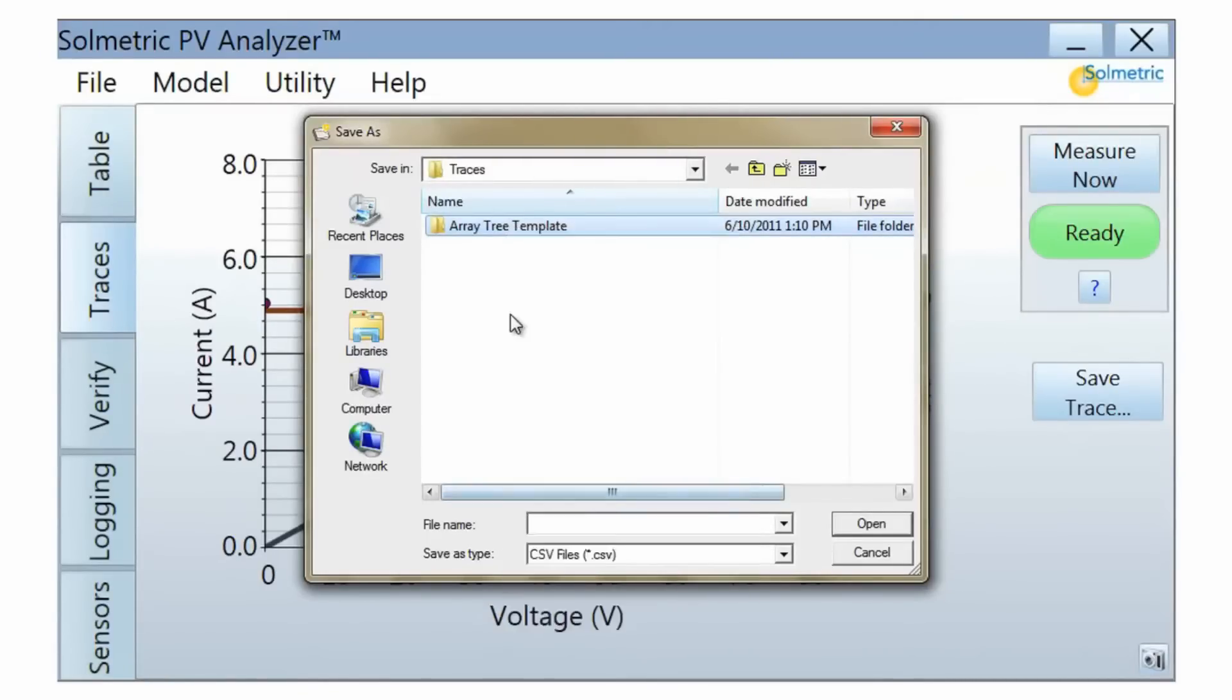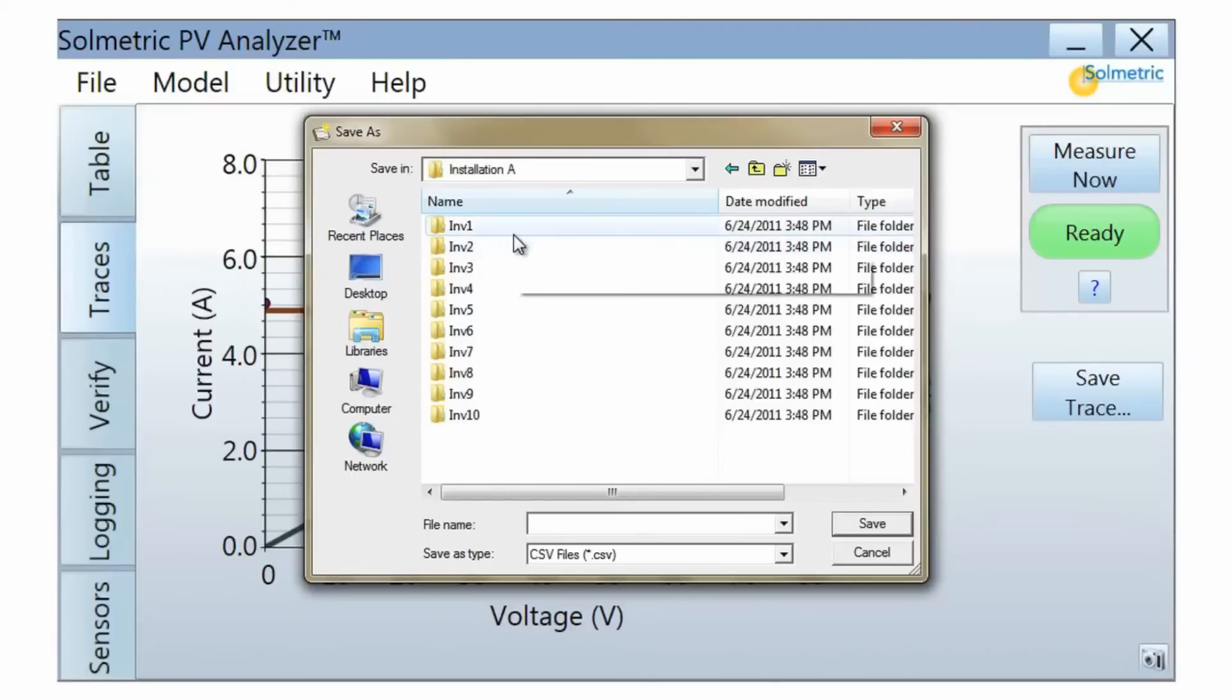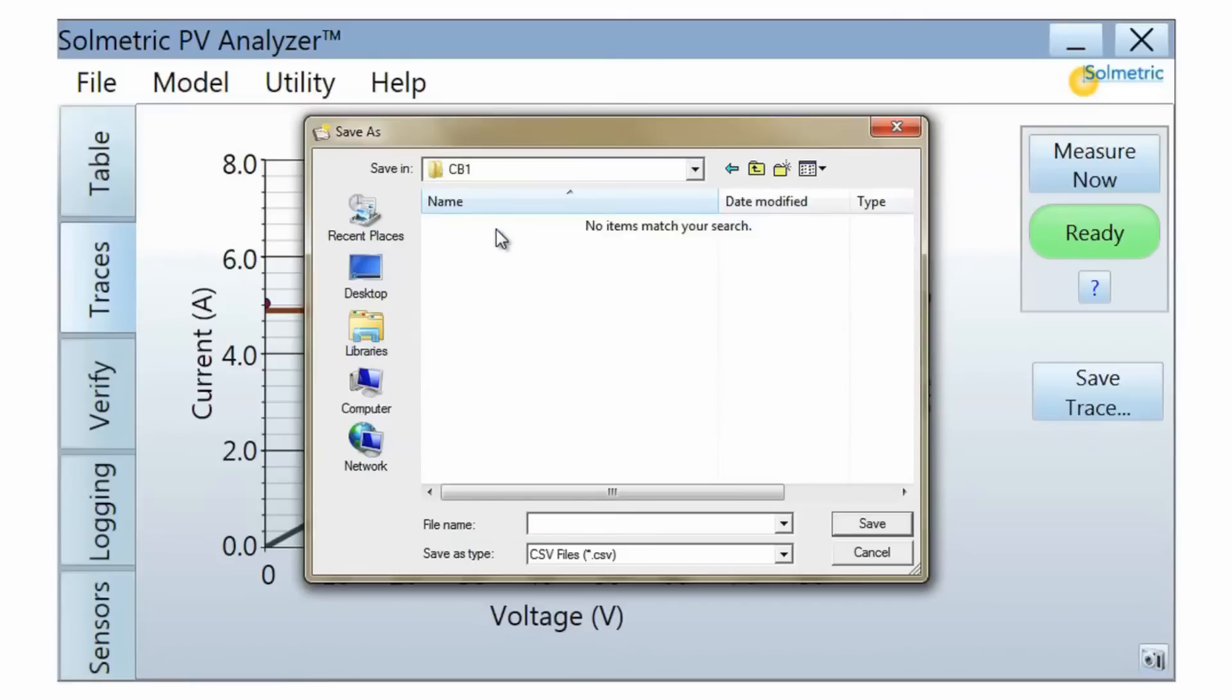Make a copy of the template and rename the top-level folder with the name of your site. The folders immediately below the site folder represent your inverters. In each inverter folder is a folder for each combiner box, and this is where you save your PV string measurements.